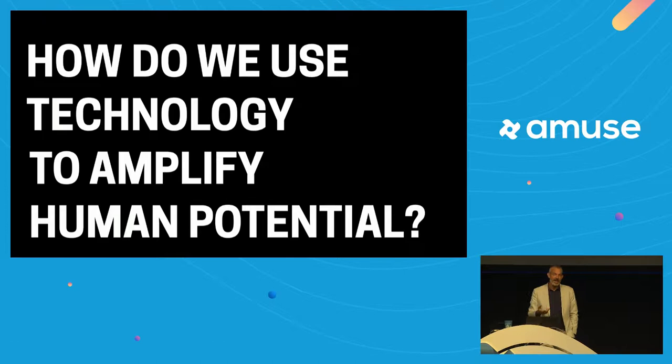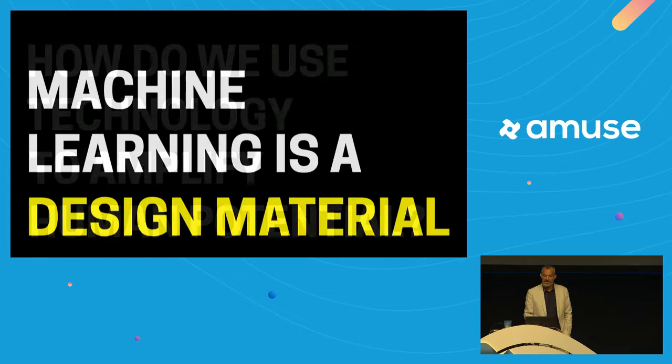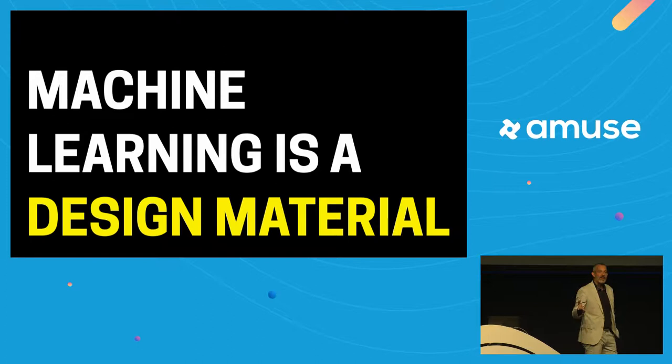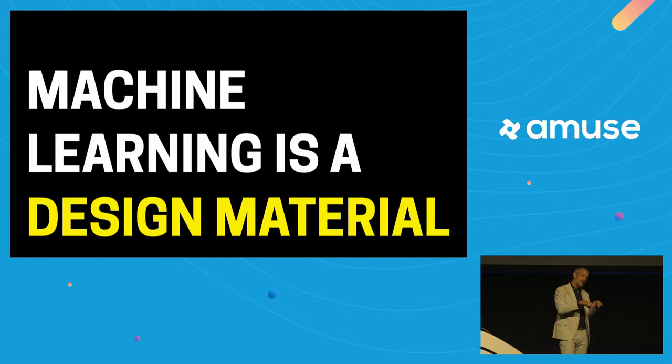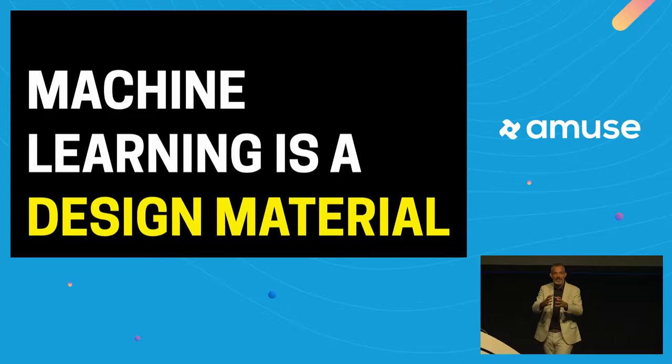We're working in digital design at an incredibly exciting moment with the arrival of a new design material called machine learning. I run a digital product agency in New York called Big Medium, focused on design for what's next — helping companies engage with emerging technologies to create something truly meaningful. For the last decade a lot of that focus has been on mobile, pushing at the frontiers of what mobile can enable — all of its sensors and its ability to interact with the world around us.